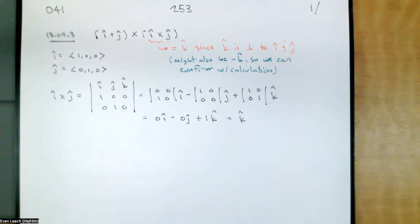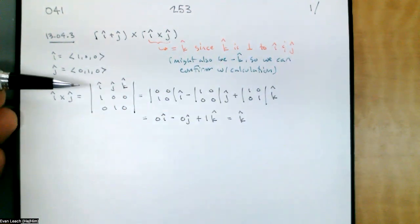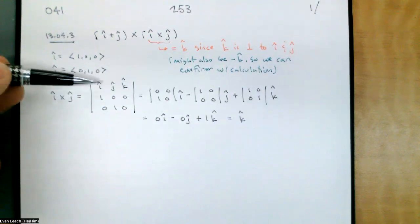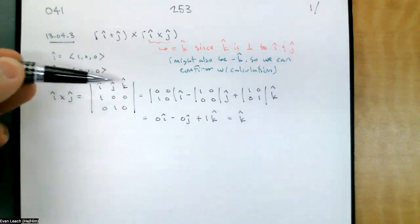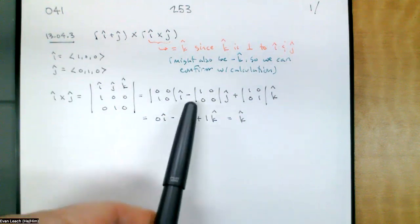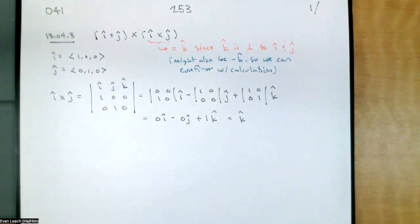In cofactor expansion, you always alternate signs. You start in the first row, first column — that's positive — then negative, then positive. So that's just part of the cofactor expansion.